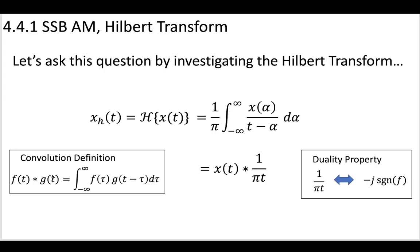So in our convolution definition, we have X(t) convolved with 1/πt. Now, by the duality property, if you look in your Fourier transform table, we have a duality property that says this 1/πt in the time domain can be transformed into the frequency function as minus j times the signum of f.